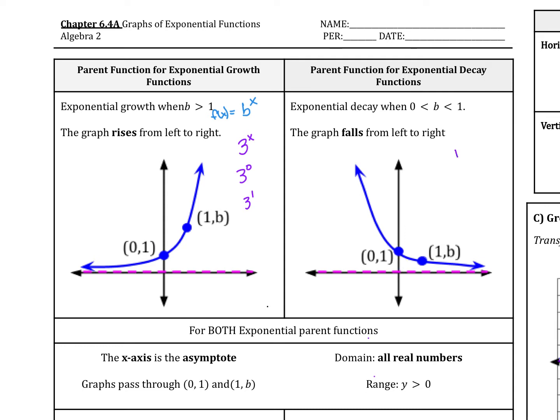So like in the case that I said, 1 over 7 raised to the x. Then we plug in 0 there. Anything raised to the 0 power is 1, so that is our point here. And then if we raise it to the first power, that would be 1 seventh. So it would be 1 comma 1 seventh.